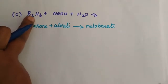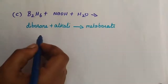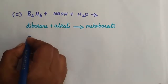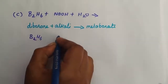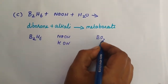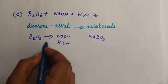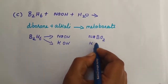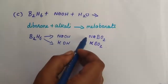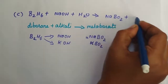Next question: B2H6 diborane reacts with sodium hydroxide and water. The statement is: diborane reacting with an alkali gives metaborate. B2H6 is diborane, and alkali means sodium hydroxide or potassium hydroxide. The products are sodium metaborate plus liberation of hydrogen.